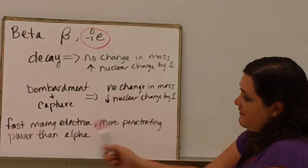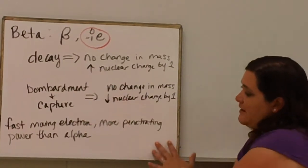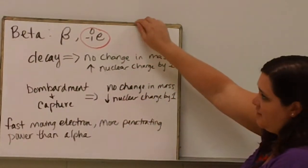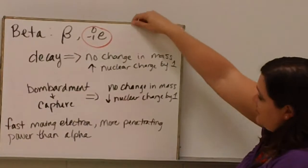Beta particles are essentially fast moving electrons. They have more penetrating power than alpha particles, so they are harder to protect cells from than alpha particles are.